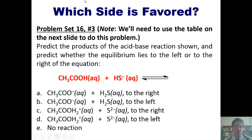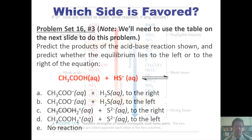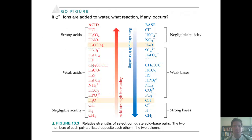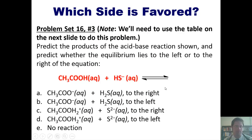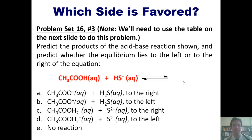Let's look at this problem: predict the products of the acid-base reaction shown, and predict whether the equilibrium lies to the left or to the right. You'll need the table I'm about to show you, so please pause, take note of it, and then return to the problem. I invite you to do this on your own, and if you like, you can click the link to a separate video where I'll show you how to do it on the board. That brings us to the end of this video — stay tuned for the next one covering acid-base properties of water. Have an enjoyable rest of your day.